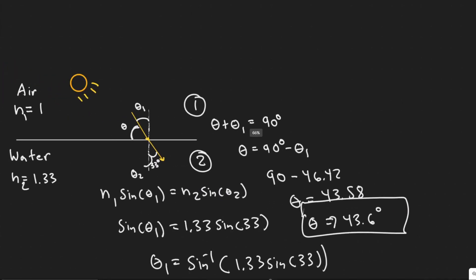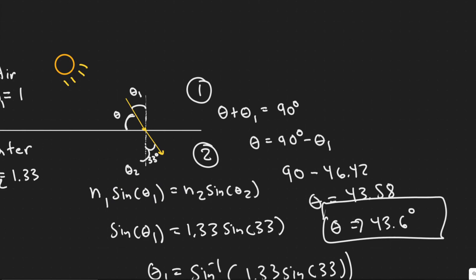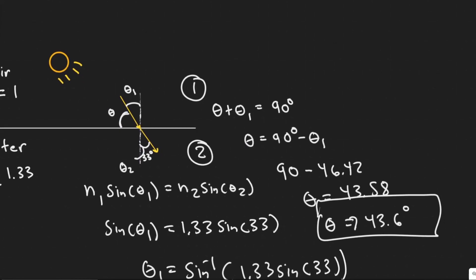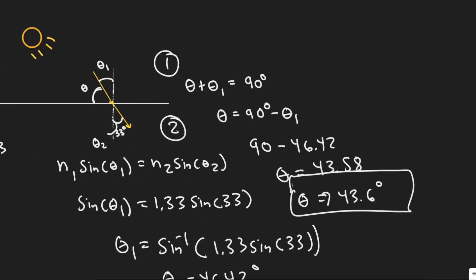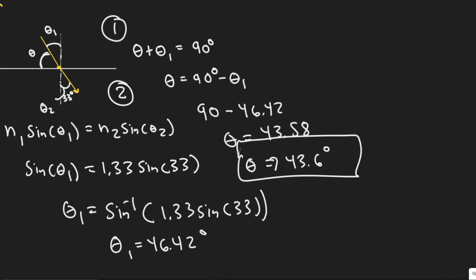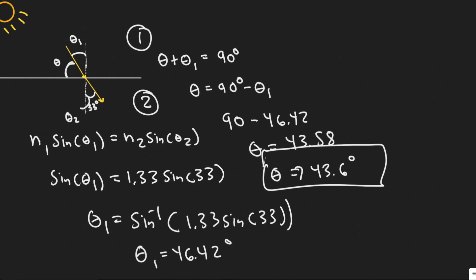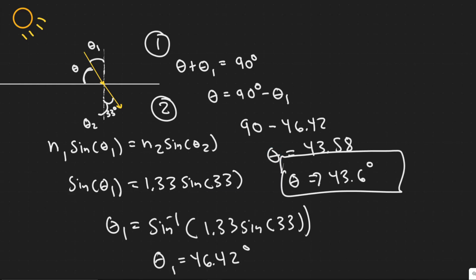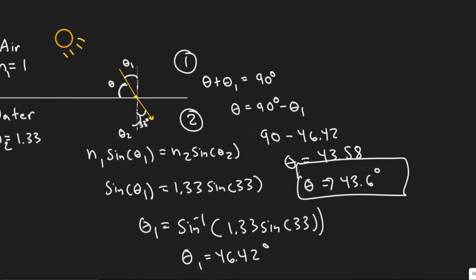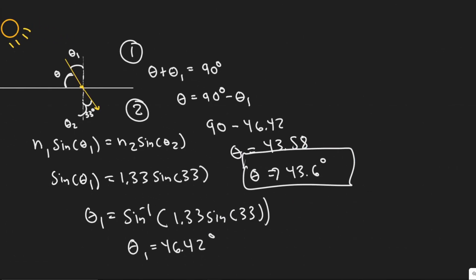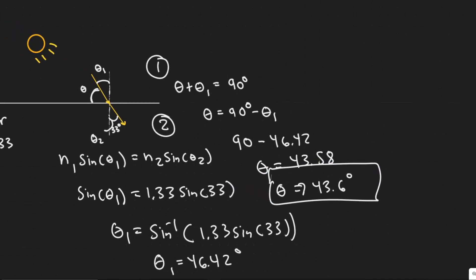Quick rundown: we used Snell's Law to find theta 1, and knowing that 90 minus theta 1 equals theta, we could solve for the final answer. We just needed n1, n2, and theta 2 to plug into Snell's Law. The answer is 43.6 degrees. Hopefully you found this video useful.